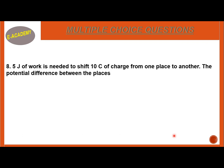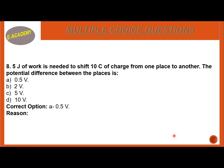MCQ Number 8: 5 Joules of work is needed to shift 10 Coulombs of charge from one place to another. What is the potential difference between the two places? Options: 0.5V, 2V, 5V, 10V. The correct option is A, 0.5V. The reason is V = W/Q. W = 5 J and Q = 10 Coulombs, so V = 5/10 = 0.5V.